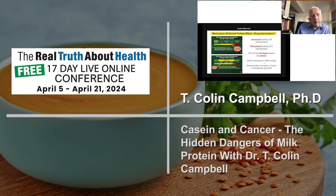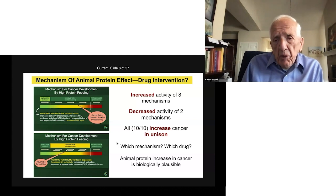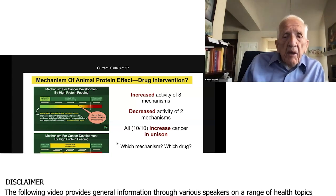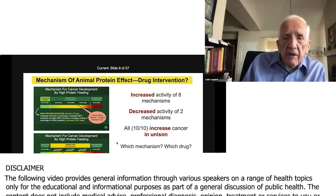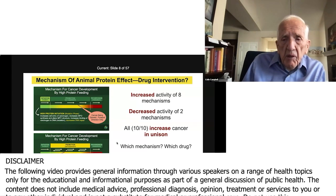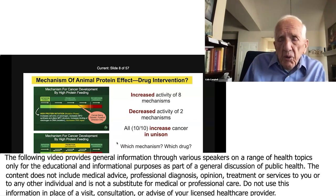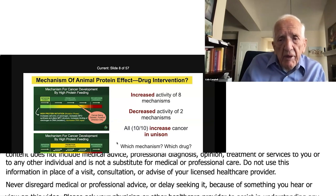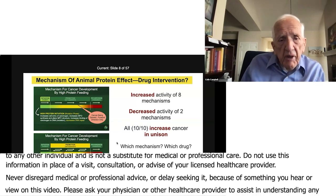Let me bring it back again to what I showed yesterday. When we started our studies, first noticing in the experimental animal studies that casein, the main protein in cow's milk, that's high quality — as we increased casein, the animal protein in the diet, we could turn on cancer like you wouldn't believe, almost immediately, 100% in the way it went.